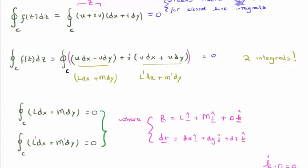So each of these must be equal to zero separately. We know, of course, that r is equal to l i hat plus m j hat plus zero k hat. This is something we saw in video number two, where we say r is the more general vector field having both an i and j hat component. Dr is, of course, dx i hat plus dy j hat plus dz k hat.